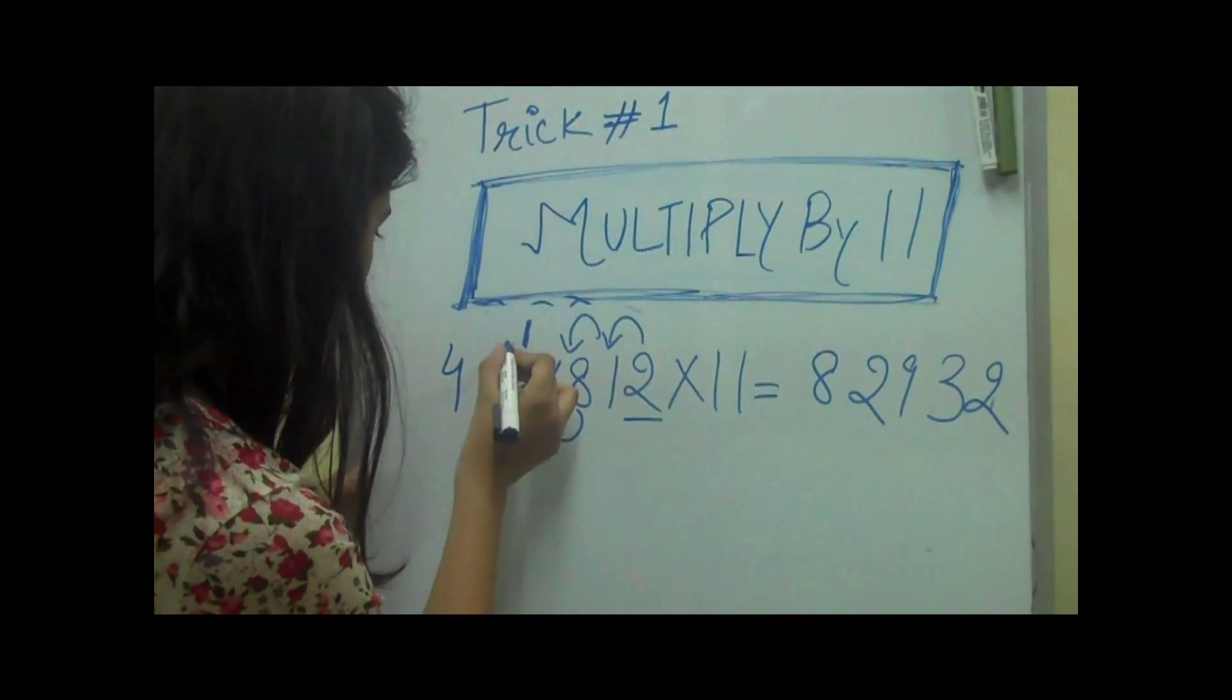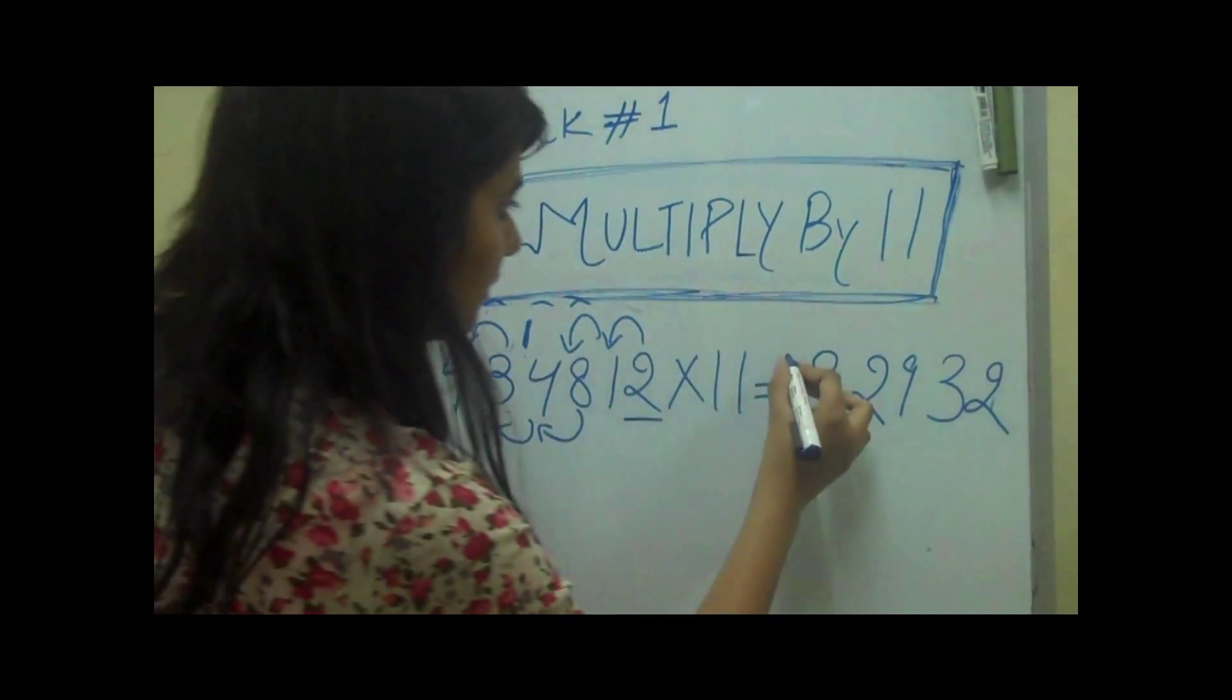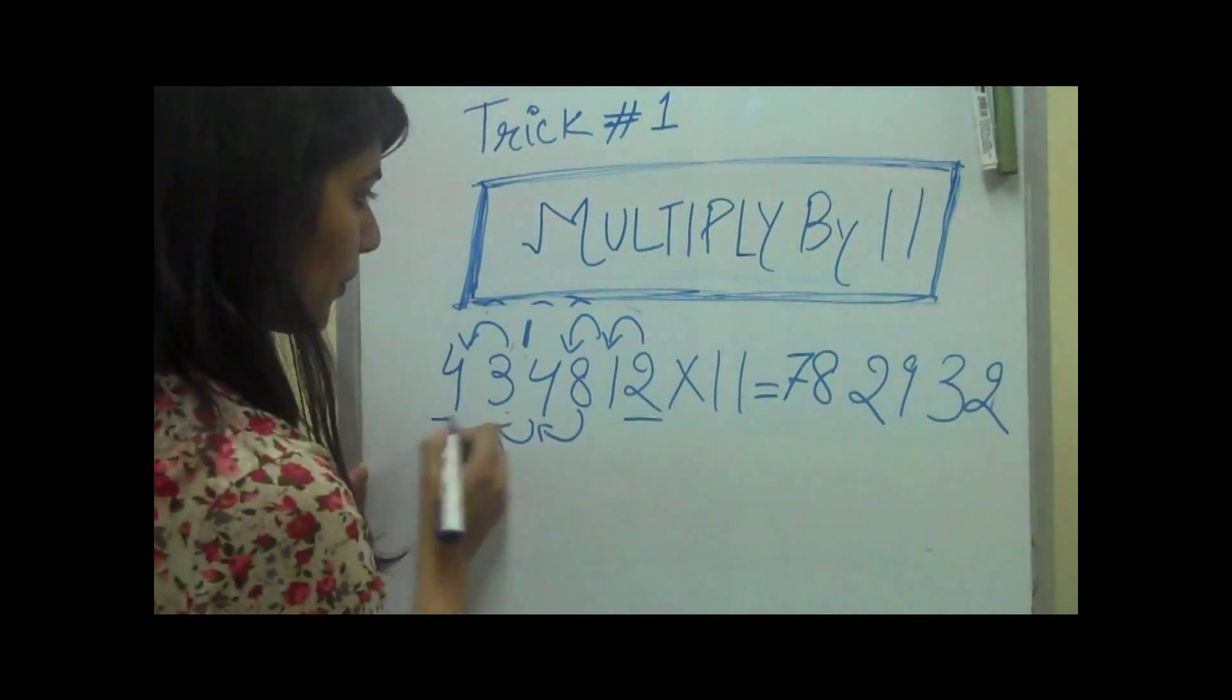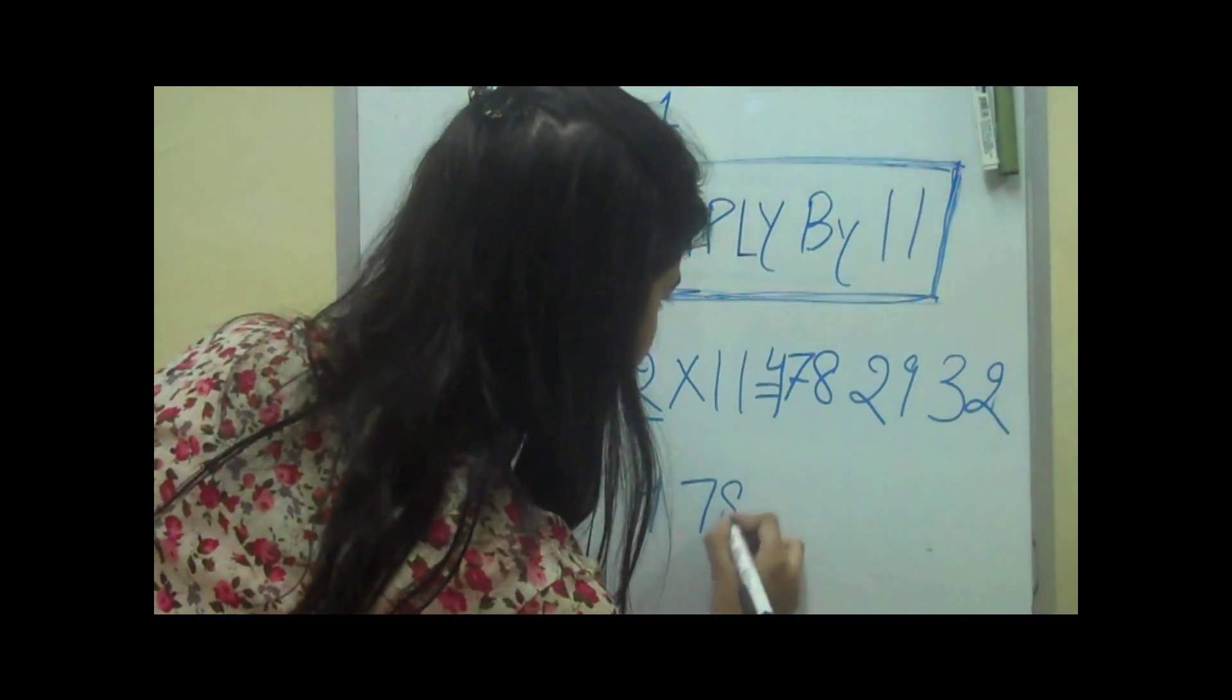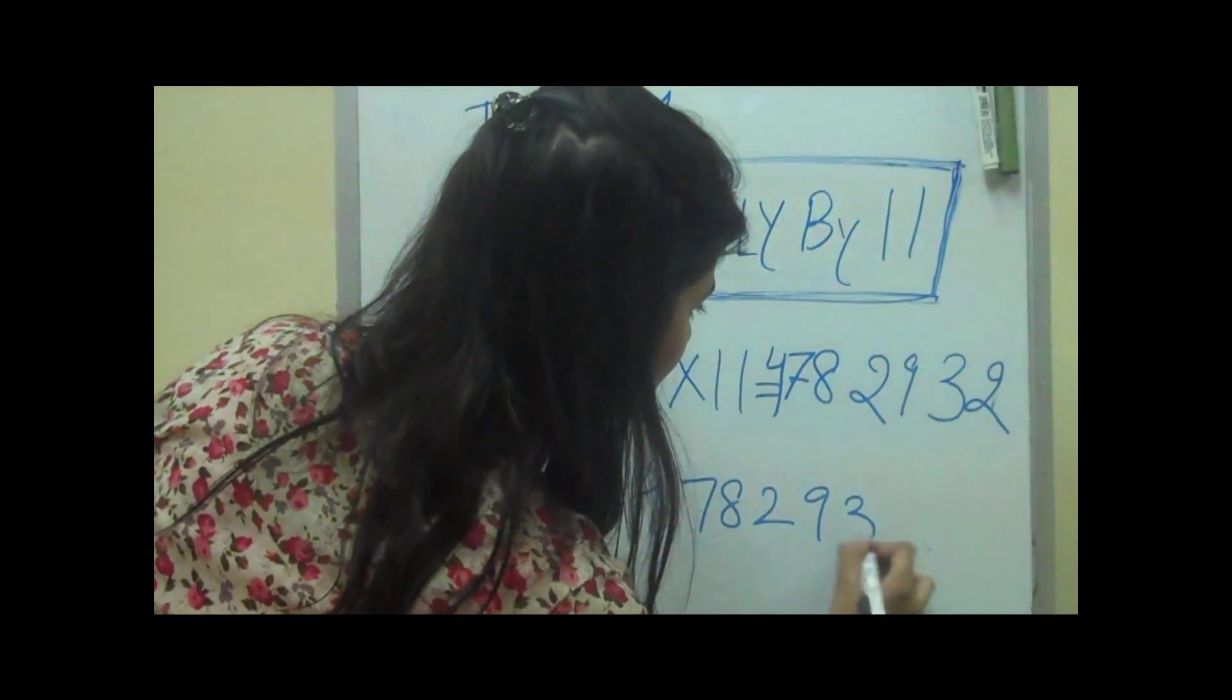Then we'll add these two numbers, 4, 3 is 7, and then we'll put 4 as it is. 4782932 is the answer.